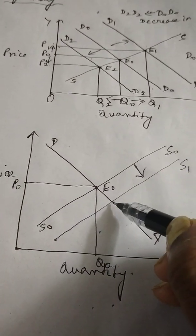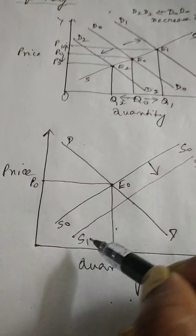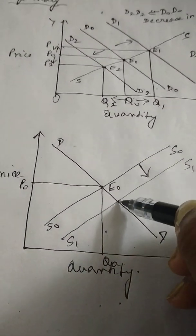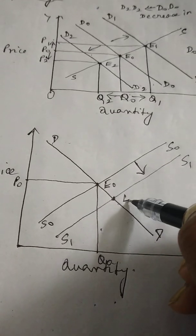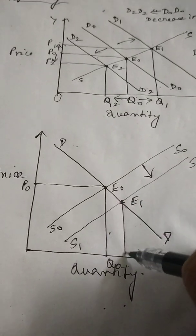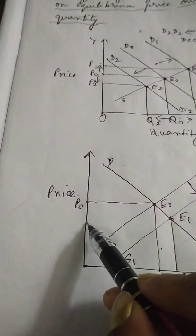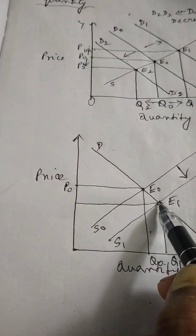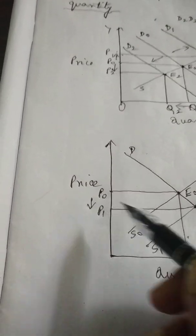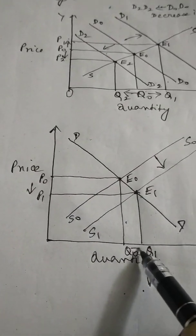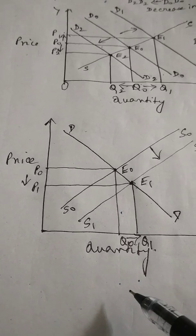The new equilibrium is the point of intersection of the new supply curve S1, S1 and the original demand curve DD. The new equilibrium point is E1, new equilibrium quantity is Q1, and the new equilibrium price is P1. Equilibrium price falls and equilibrium quantity increases from Q0 to Q1.